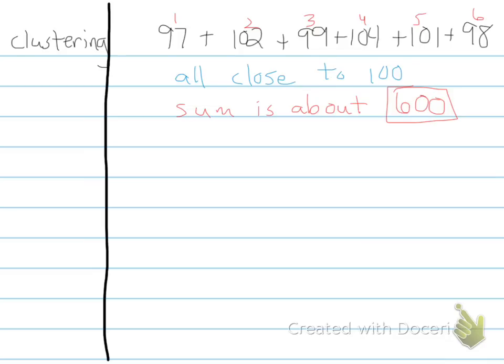Another example is, say we had the number, we'll go with 62 plus 58 plus 60 plus 61. We could say that all these numbers are close to 60, so they're all close to 60, which would mean we have 1, 2, 3, 4 of them. So we have 60 times 4, which would be about 240.